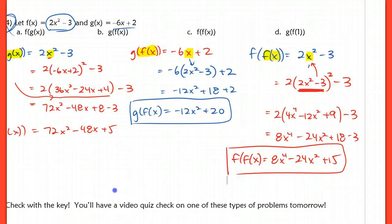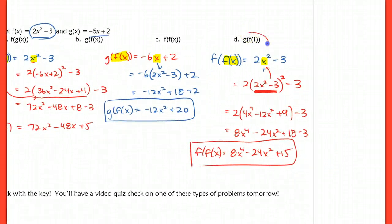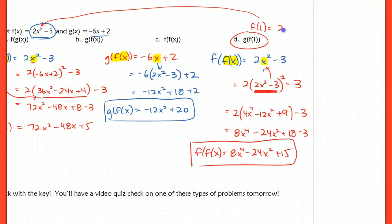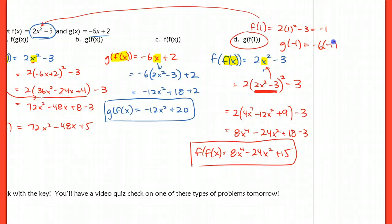The very last problem, g of f of 1, is actually easier because I don't have to input an entire function — I just plug in f of 1. Find f of 1 first: 2 times 1 squared minus 3 gives 2 minus 3, which is negative 1. Then take g and substitute in negative 1: negative 6 times negative 1 plus 2, which is 6 plus 2, giving 8. So g of f of 1 is equal to 8.